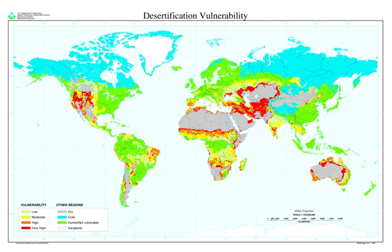The immediate cause of desertification is the loss of most vegetation. This is driven by a number of factors, alone or in combination, such as drought, climatic shifts, tillage for agriculture, overgrazing and deforestation for fuel or construction materials. Vegetation plays a major role in determining the biological composition of the soil. Studies have shown that the rate of erosion and runoff decreases exponentially with increased vegetation cover. Unprotected dry soil surfaces blow away with the wind or are washed away by flash floods, leaving infertile lower soil layers that bake in the sun and become an unproductive hardpan.